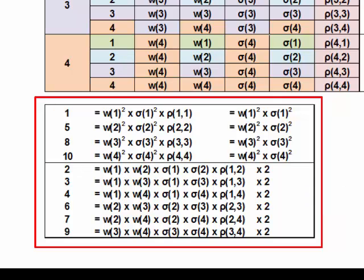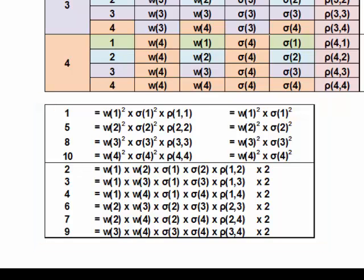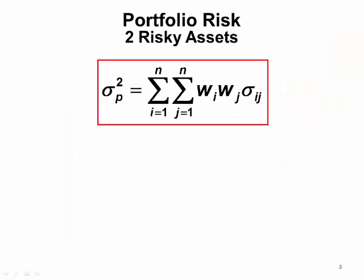Final tips on the number of components for portfolio standard deviation: you're going to have 1 squared component for each asset in the set, and the number of correlation components is going to be N squared minus N, divided by 2. So for N equals 4, that's 10. More than 2 assets gets pretty complex.